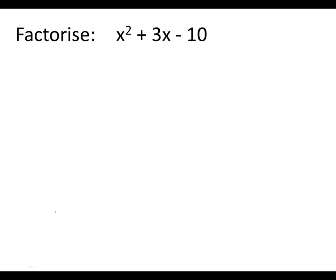We're going to start with an example. So the question says, factorise x squared plus 3x minus 10. So we set the question up with our two sets of brackets and then we circle that 10 at the end including the minus.